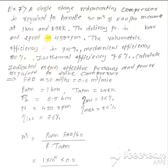The speed is 450 rpm. The volumetric efficiency is 75%, mechanical efficiency is 80%, isothermal efficiency is 76%. Calculate the indicated mean effective pressure and power required to drive the compressor.